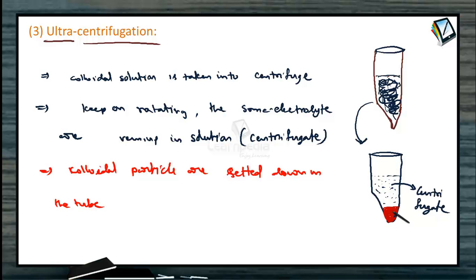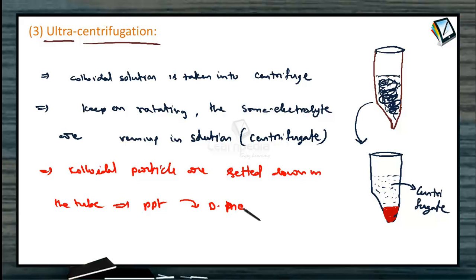This colloidal solution, which is present in the tube, becomes a precipitate. By adding the corresponding dispersal medium to this precipitate, we can get the corresponding colloidal solution. After the centrifugation process, these colloidal particles are settled down as a precipitate, so we have to add a dispersal medium to get the corresponding colloidal solution back. This allows us to easily separate the pure colloidal solution.